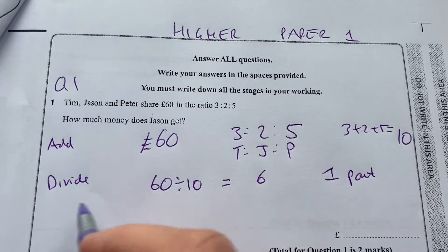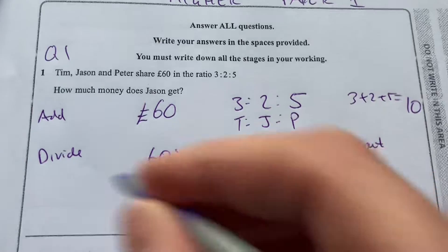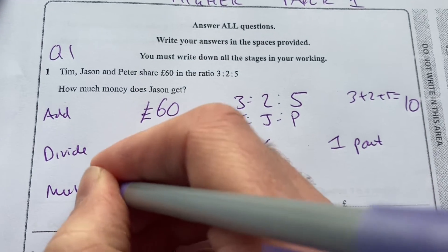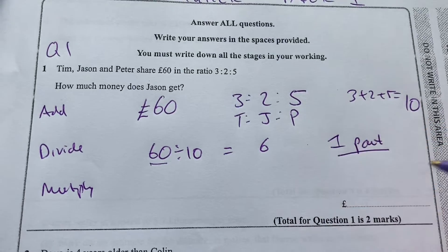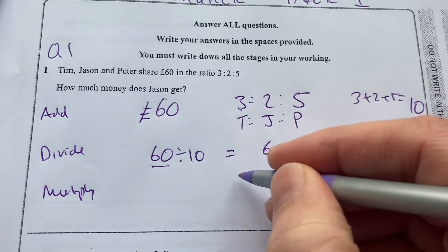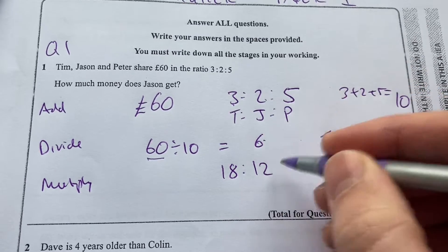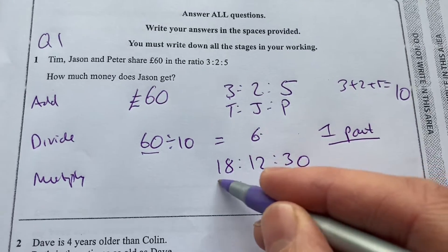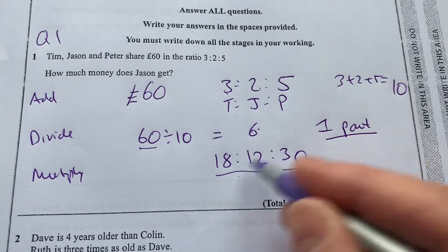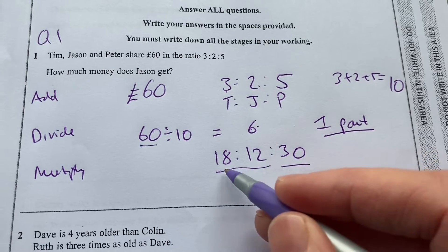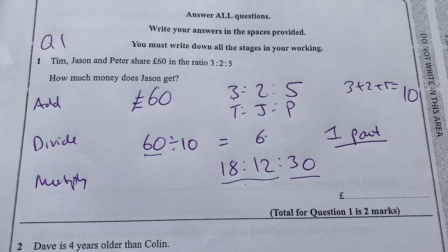So we've added them up, and we've divided the total, and now we're going to multiply up that one part into each of them. So 3 times 6 is 18, 2 times 6 is 12, 5 times 6 is 30. And 18 plus 12 is 30, plus 30 is 60. So we know that we're correct.